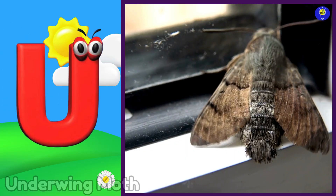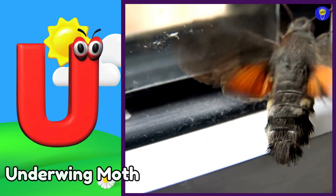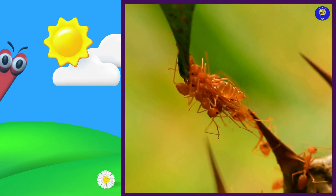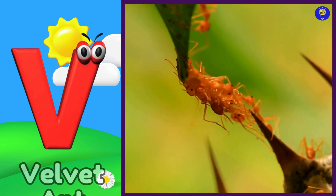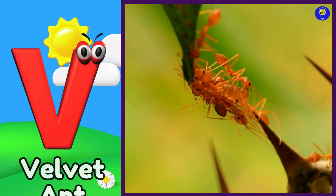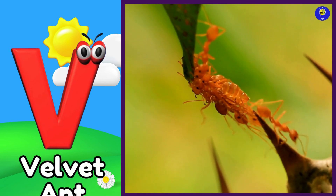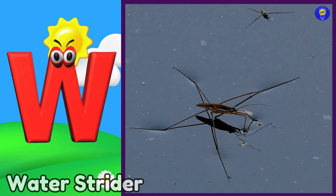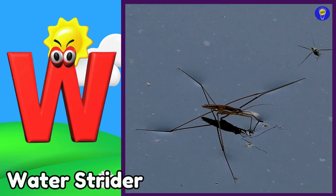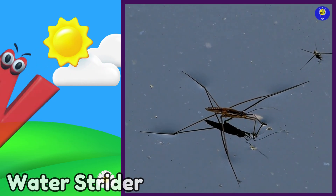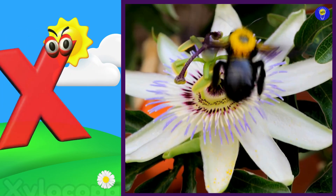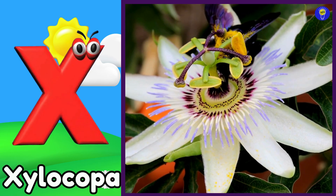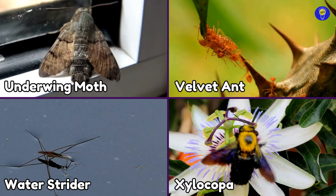U is for underwing moth. U, u, underwing moth. V is for velvet ant. V, v, velvet ant. W is for water strider. W, w, water strider. X is for Xylocopa. X, x, Xylocopa.